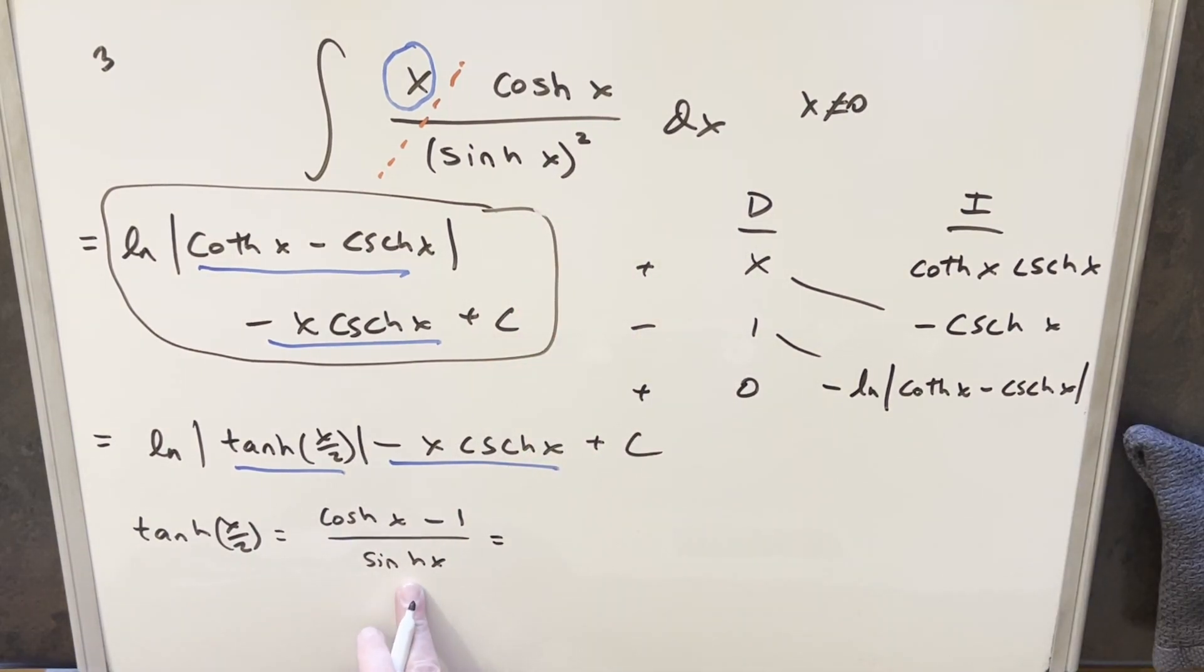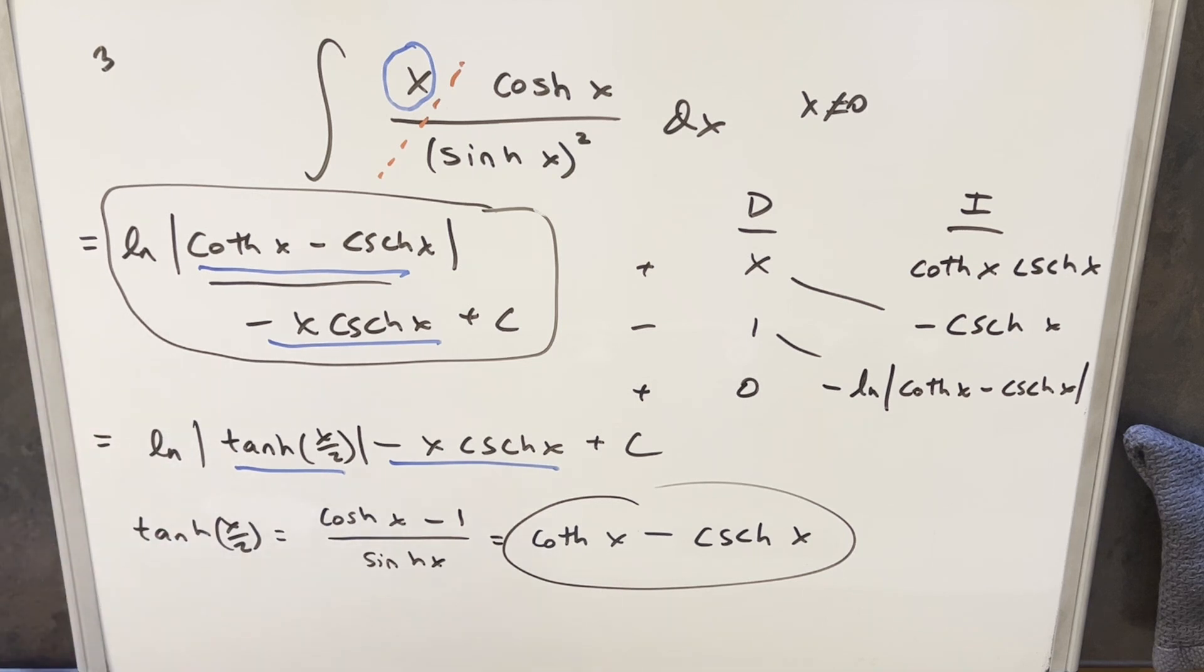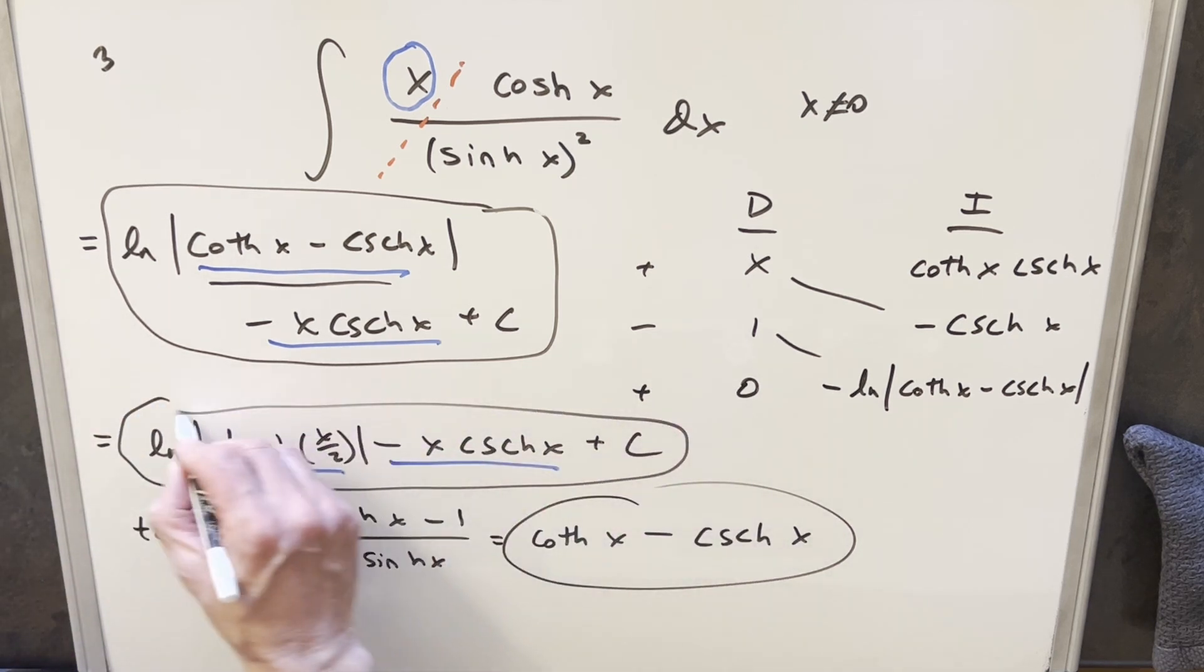So all I really need to do is take this and rewrite it. We have cosh over sinh x here, that's going to be the same thing as hyperbolic cotangent x. And then minus one over sinh x, that's going to be the same thing as hyperbolic cosecant x. But this thing here, this is the same thing we have right here. So it turns out this solution and MIT solution are equivalent, and so I think we're okay.